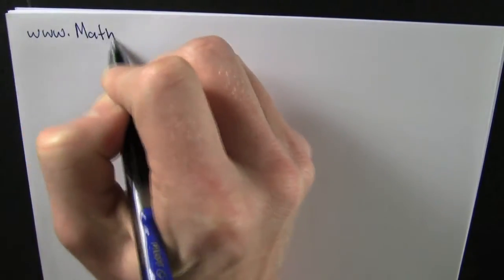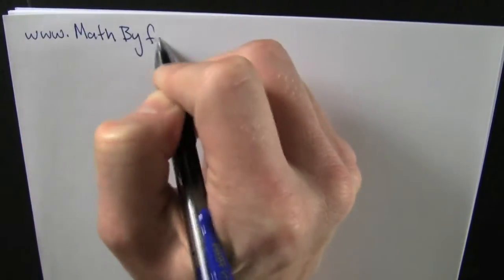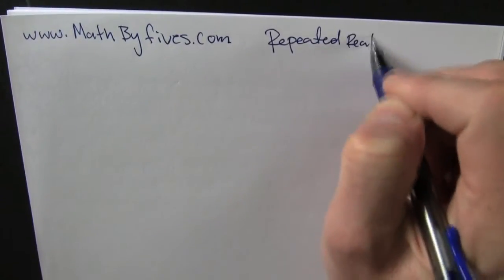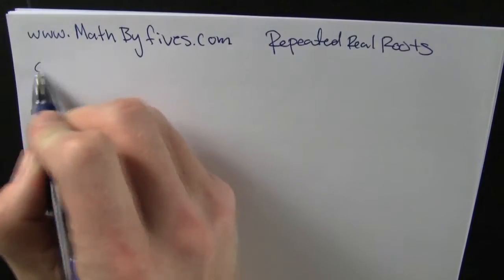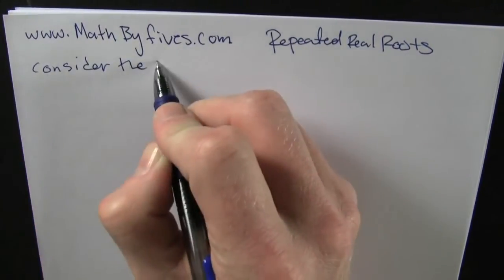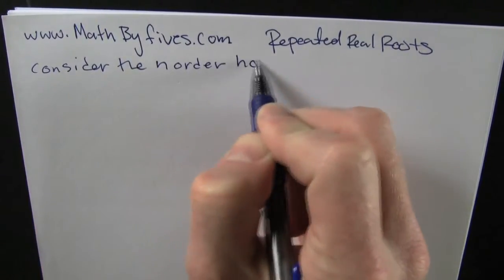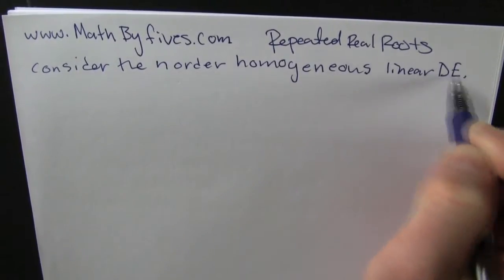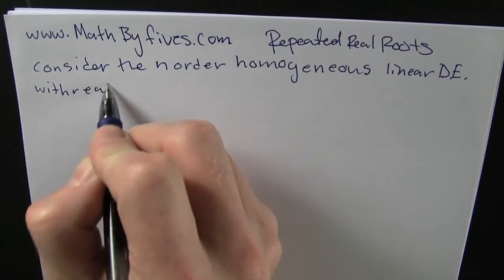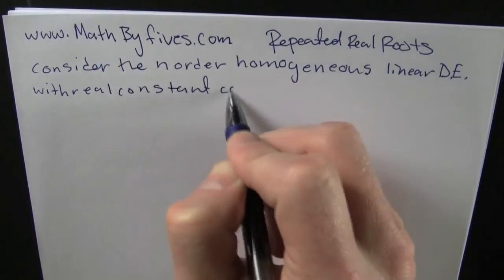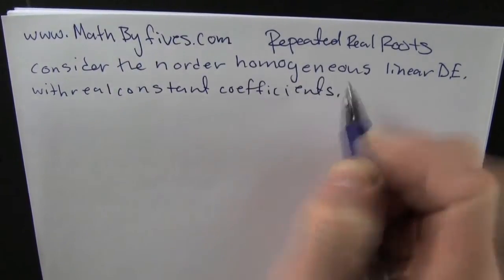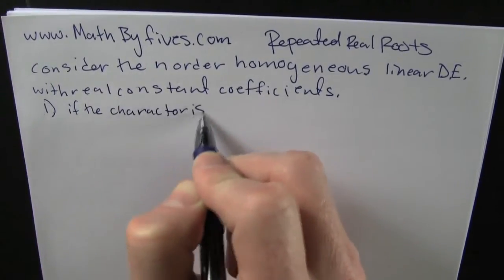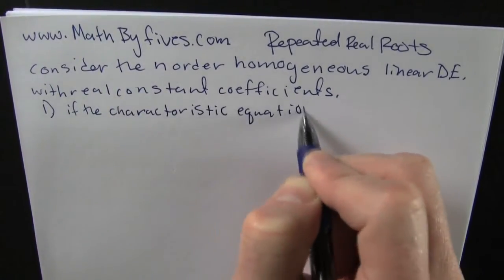www.mathbyfives.com — we're going to be solving linear differential equations with repeated roots. We're going to consider the nth order homogeneous linear differential equation with real constant coefficients. This is what's going to happen if the characteristic equation has repeated roots.